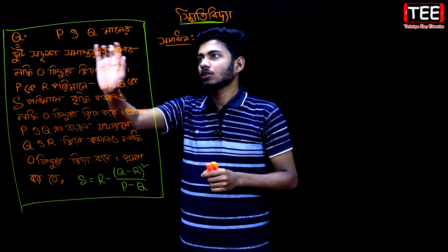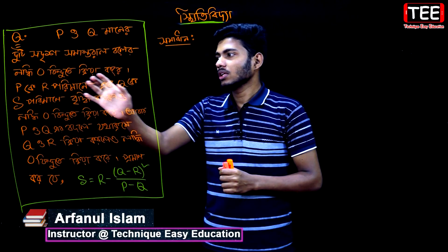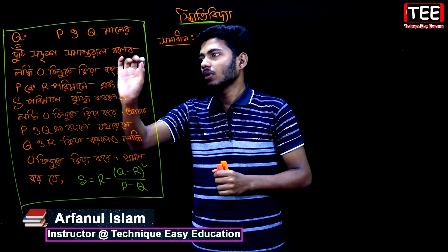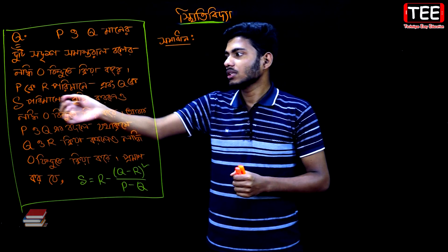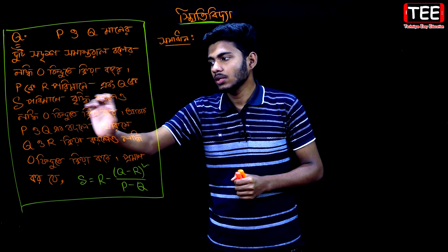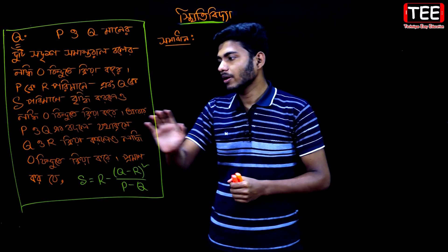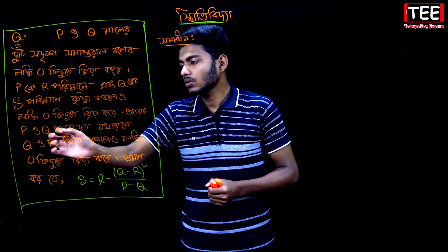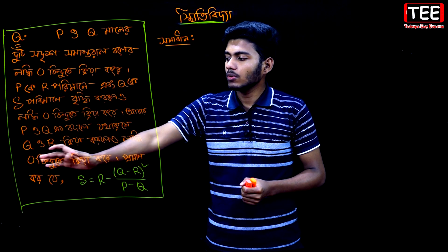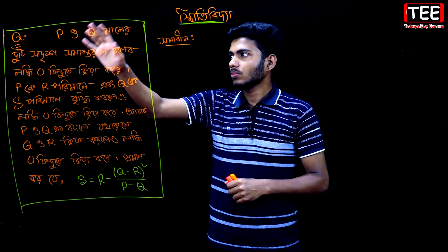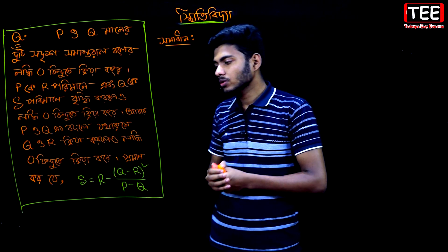The point is that P, Q, and Q are the same. The point is that P, Q, and Q are the same. The point is that P, R, Q and S are the same. The point is that P and Q are the same. This is the one that we have to do with all the rules.